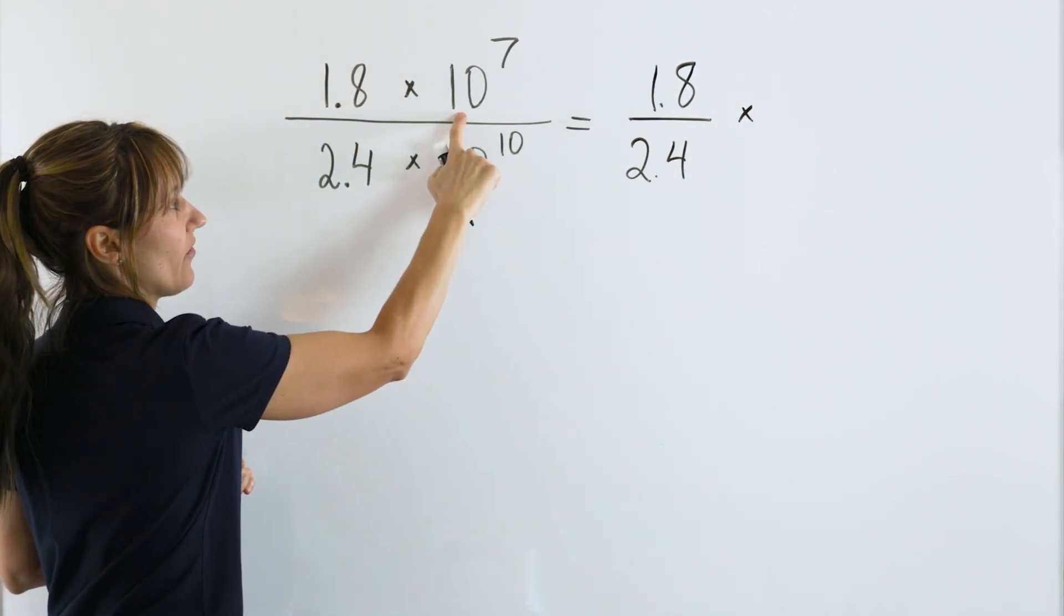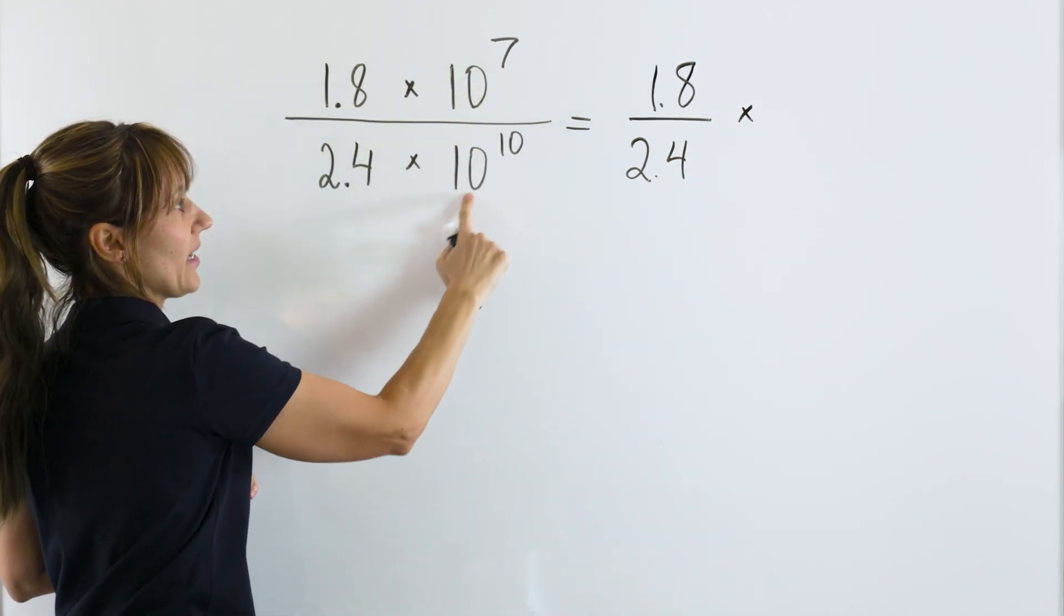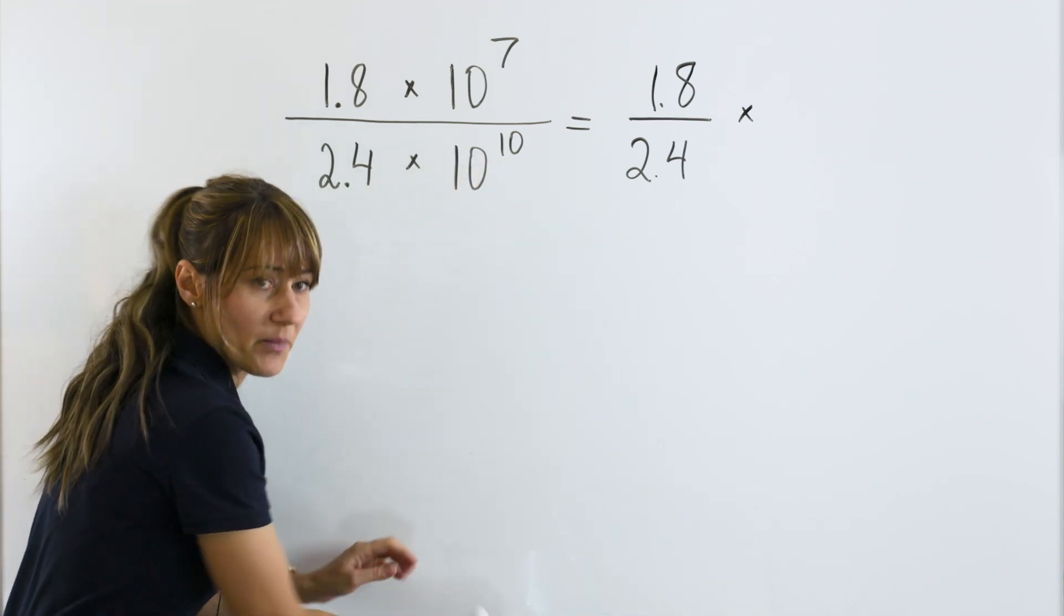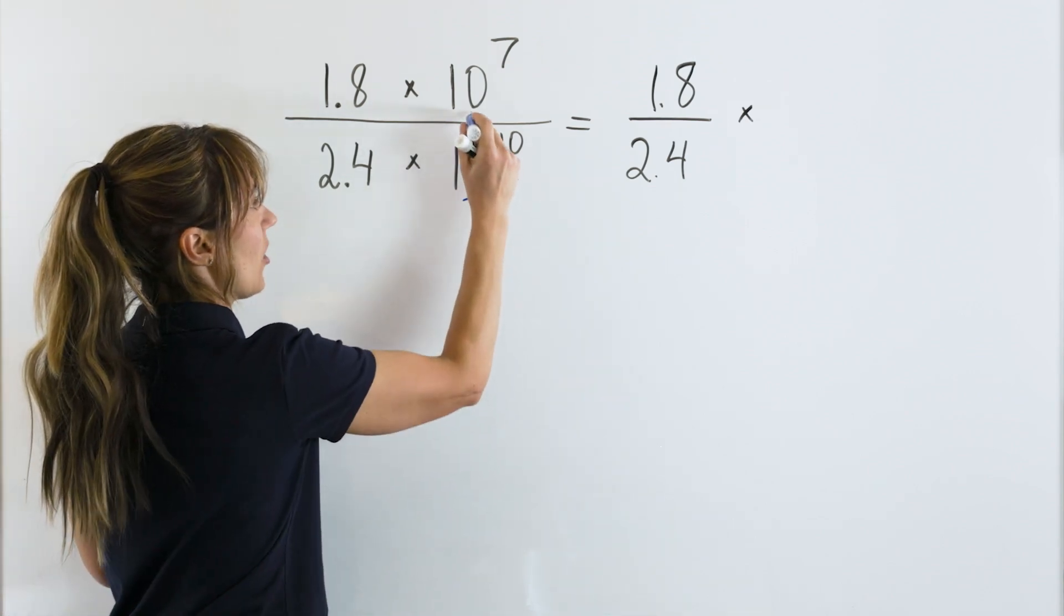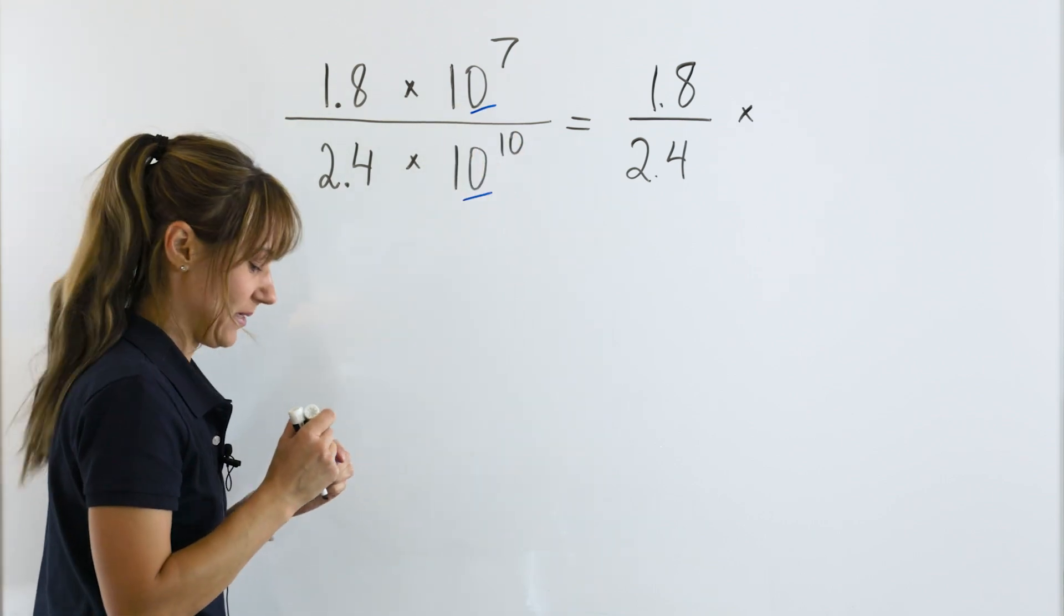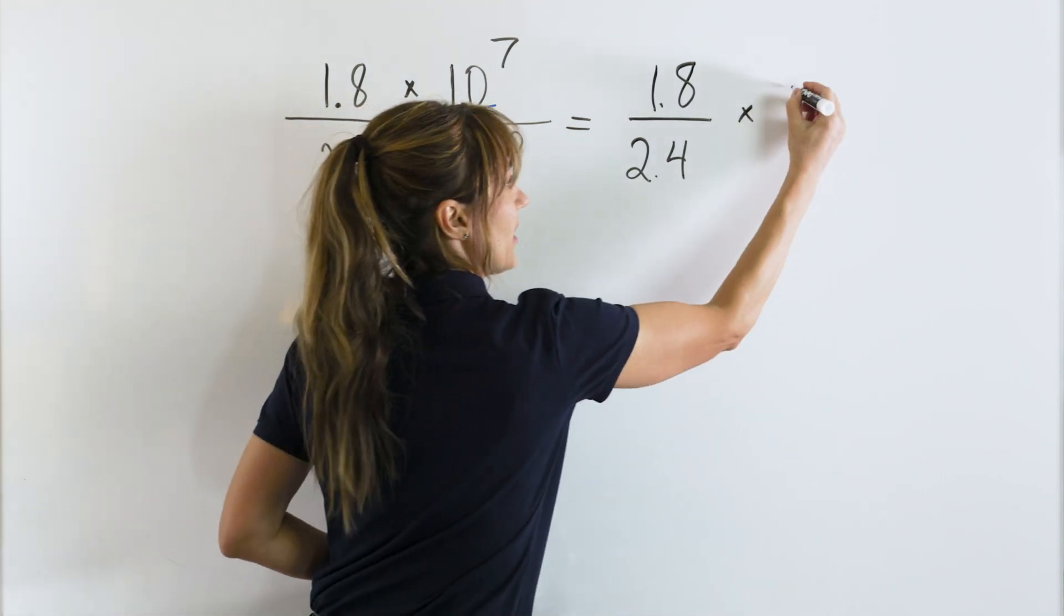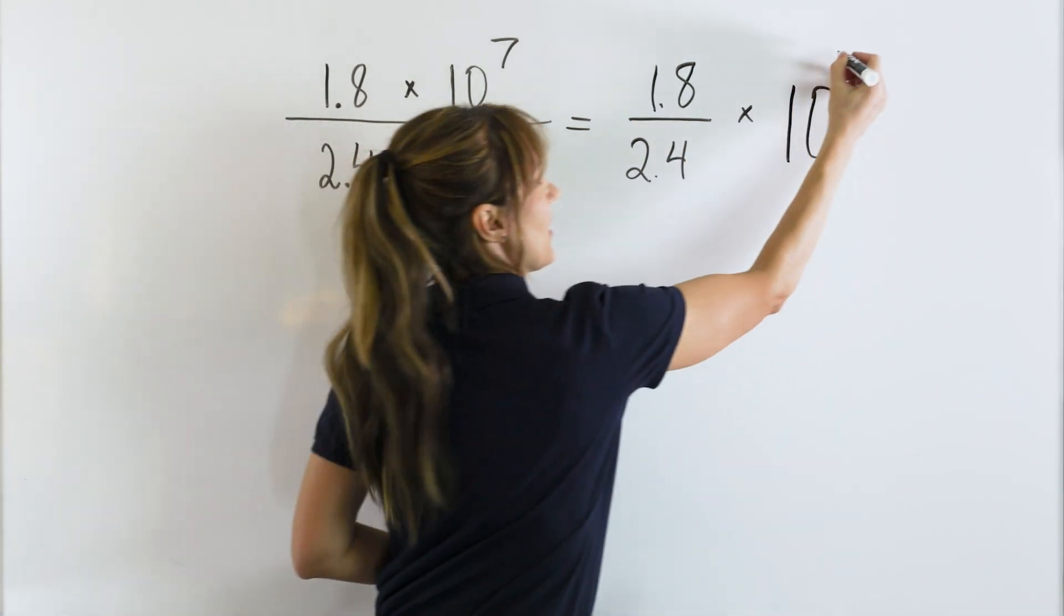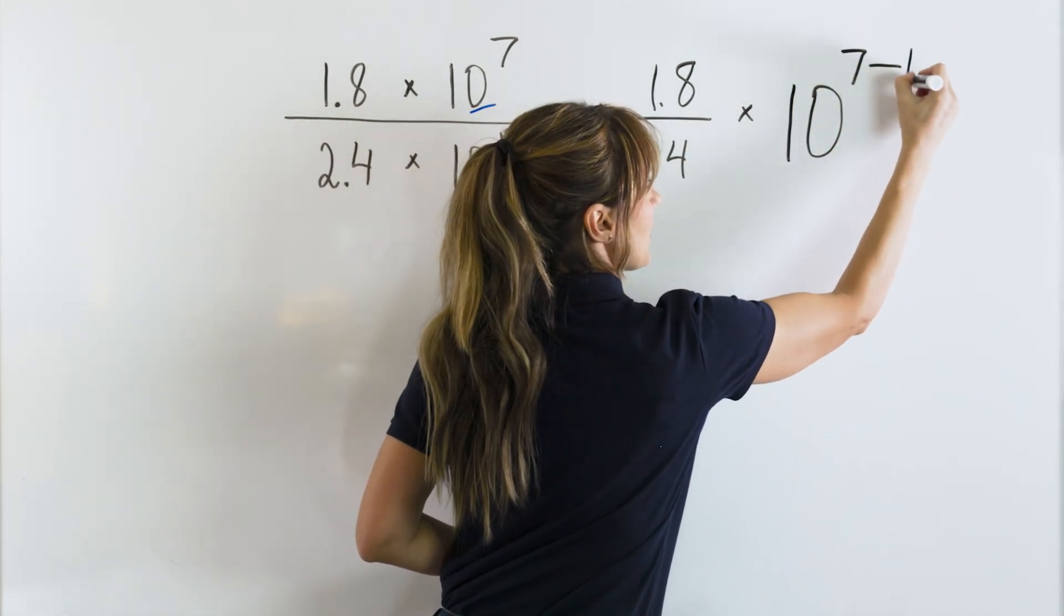Here, we will divide 10 to the power of 7 by 10 to the power of 10. When you divide with the same base, we have the same base 10. We will subtract the exponents. So, keep the same base 10 and subtract the exponents: 7 minus 10.